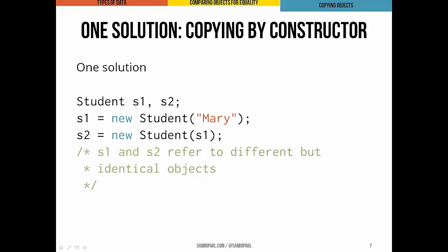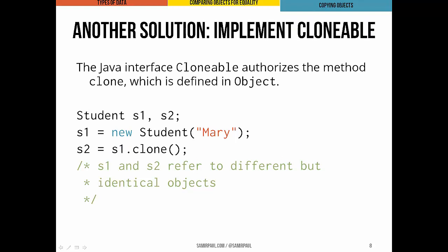The way we got around this in an earlier unit was to add a constructor that takes another student object and creates a brand new object with all the same instance variable values. This copies the parameter object's data — in this case s1 — into the instance variables of the new student object pointed at by s2. Now we have identical but distinct objects with no aliasing.